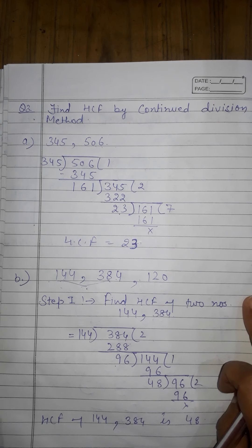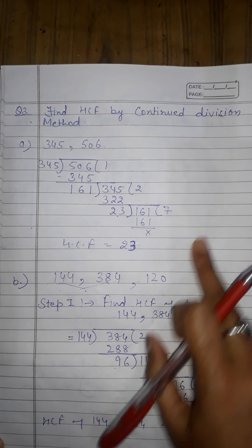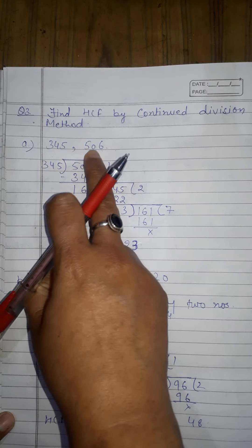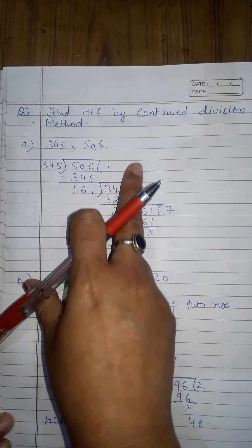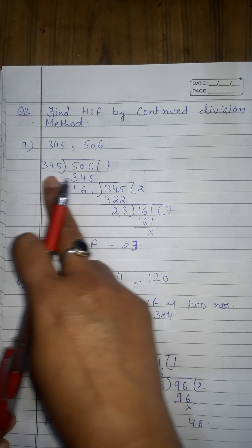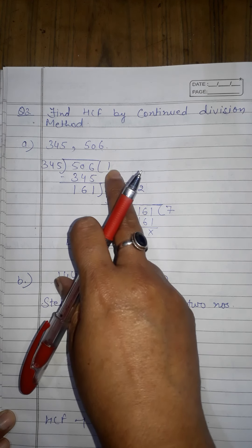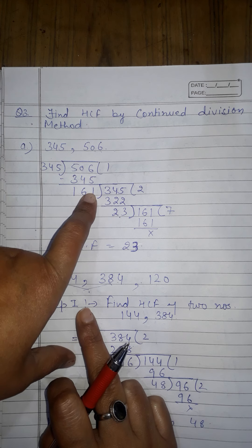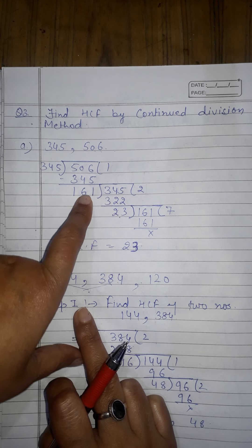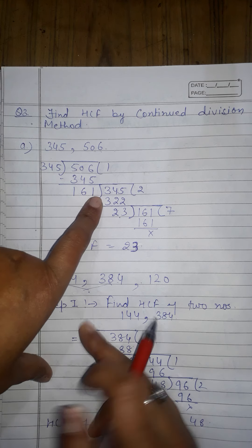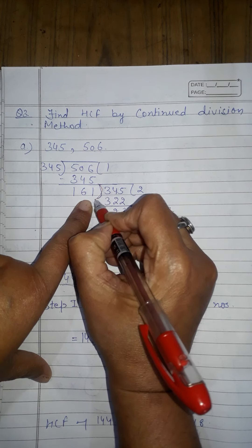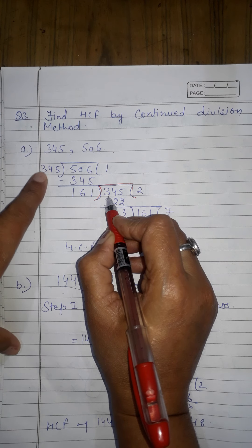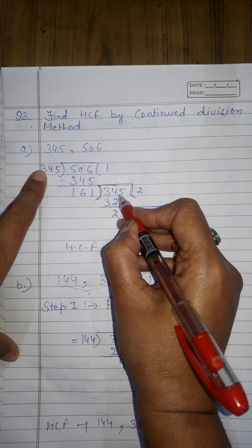Question 3: find the HCF by Continued Division Method. I have taken part with 345 and 506. Divide the greater number 506 by the smaller 345: the quotient is 1 and remainder is 161. Since the remainder is not zero, we continue the division.